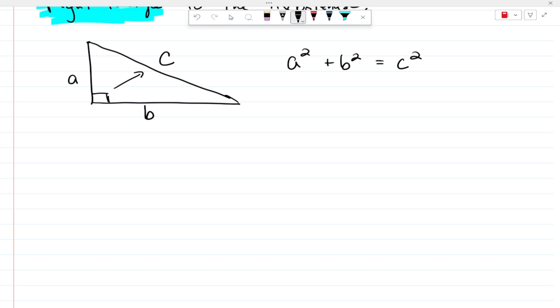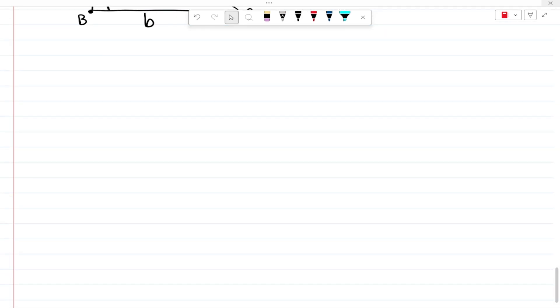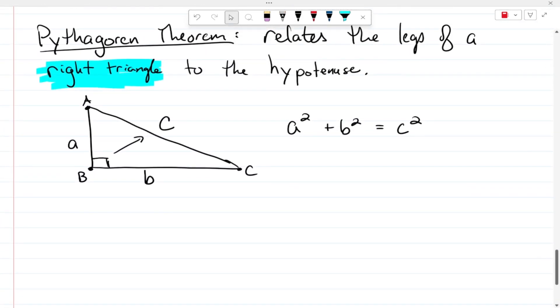So if we call this angle A, B, and C, then what we can do is we can go ahead and find any side we want, as long as we know two of the sides. And to be honest with you, once we get a better foundation in trig, we can go ahead and find other things provided we have enough information. But more on that later.